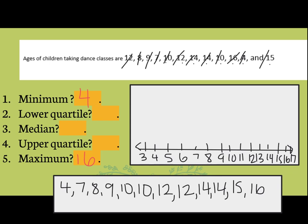Next, we find the median by crossing numbers out from both ends. We end up with two numbers in the middle — ten and twelve. Find the mean of those two numbers: ten plus twelve divided by two. Or if you already know that halfway between ten and twelve is eleven, you're good. So we put eleven as our median. If you only have one number in the middle, circle that one number — that's your median and you don't have to do anything else with it.